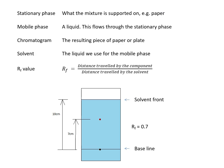Here are some terms you need to know. The stationary phase is what the mixture is supported on — for example, paper. The mobile phase is the liquid which flows through the stationary phase. The chromatogram is the piece of paper or plate that you end up with. The solvent is the liquid used for the mobile phase.